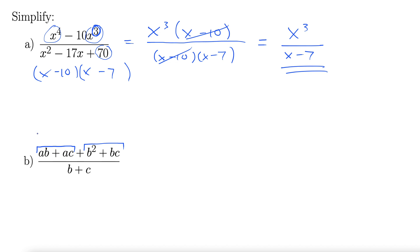What can we factor out of these first two terms? Well, an a comes out, leaves us with b plus c. Out of the second two terms, a b comes out, leaves us with b plus c again.